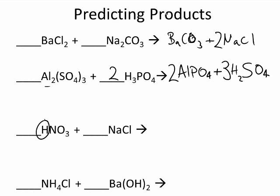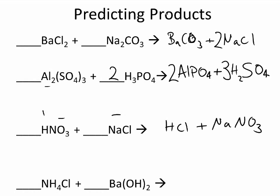In the next one, hydrogen is going to displace sodium, and they just swap partners. Hydrogen is 1+, sodium is 1+, nitrate is 1−, and chlorine is 1−. This should be an easy swap. We're going to have HCl — hydrochloric acid — plus sodium nitrate. It's already balanced. That was pretty easy.